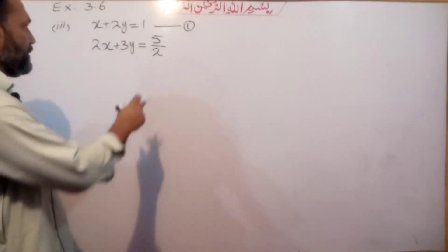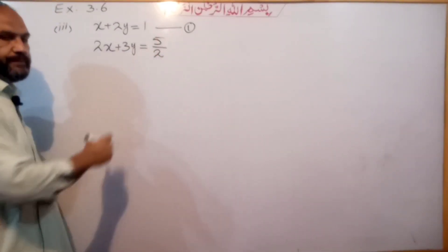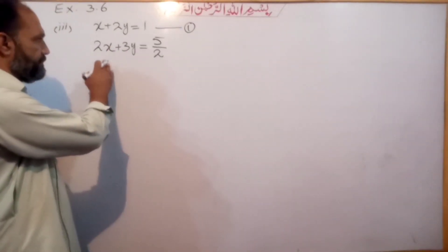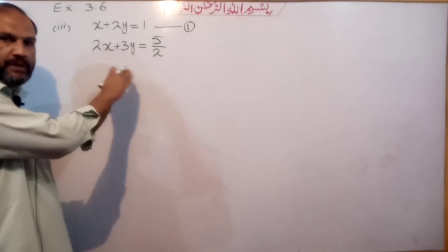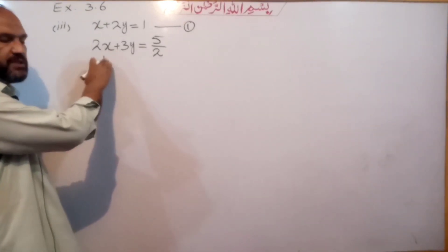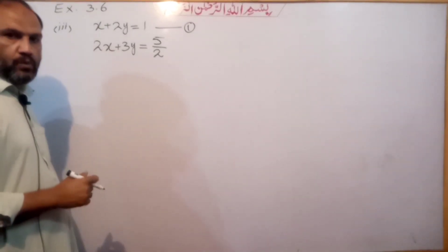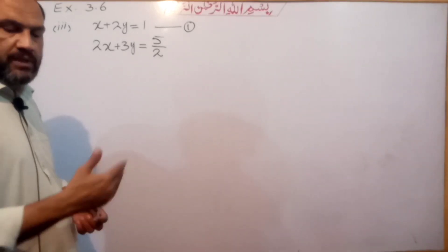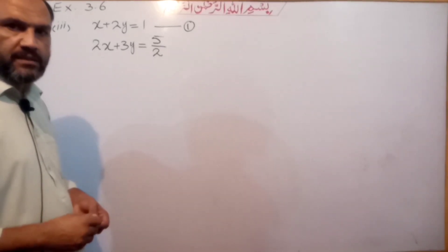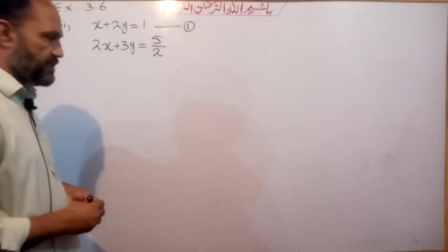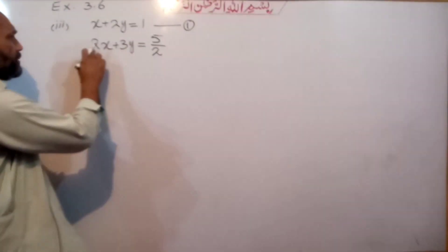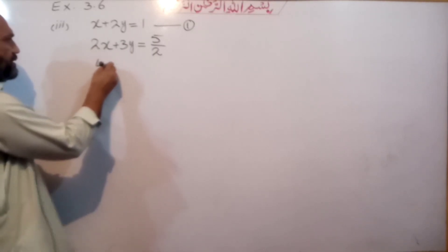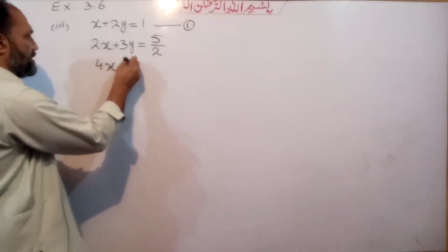If we multiply equation number 2 by 2 on both sides, the left-hand side gives us 4x plus 6y.